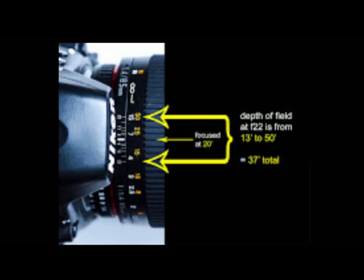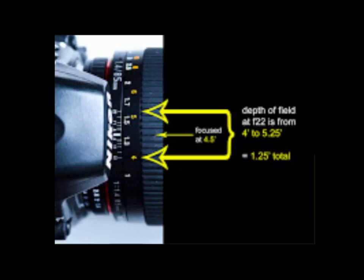Let's take the same lens and the same F-stop, but now we're focused at four and a half feet. So we're still at F22, still using the same lens, but we're focused closer. Now our depth of field starts at about four feet and goes to five and a half feet — so even though we're still using F22, we only have a foot and a quarter depth of field.